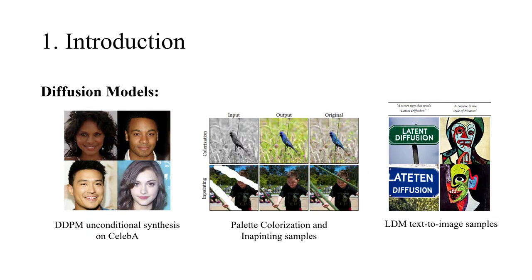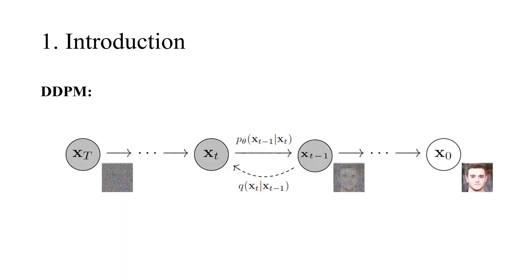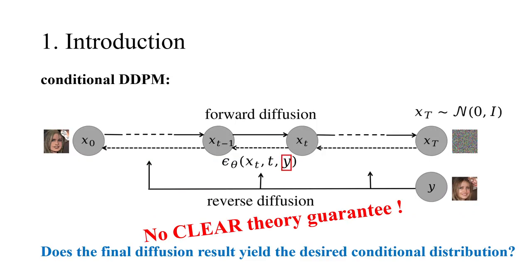Recently, diffusion-based models like DDPM, Palette, and latent diffusion models have shown competitive performance on various tasks. It accomplishes the generative task through aligning the forward-noising process with the reverse-denoising process. However, current conditional diffusion models directly inject the conditional information into the U-Net, which does not have a clear theoretical guarantee.